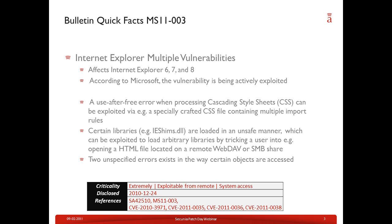Additionally, certain libraries can be loaded in an unsafe manner, which can be exploited with malicious code in those libraries. A user is vulnerable if they open an HTML file located on a remote WebDAV or SMB share. There were also two unspecified errors in how certain objects in Internet Explorer are accessed. This bulletin is considered extremely critical by Secunia's security rating, is exploitable from remote, and provides full access upon successful exploitation. These vulnerabilities were first disclosed in December 2010.